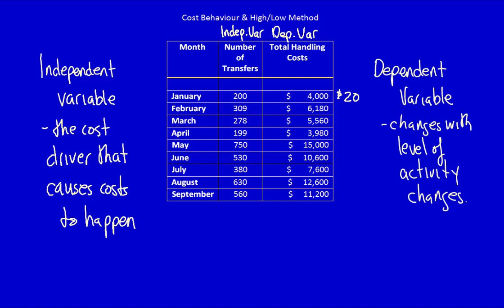If I now take February and do the same division, what do we get? $20. In fact, we get $20 all the way down if we do the division. This indicates that this is a purely variable cost. This is not a mixed cost.